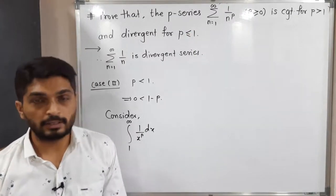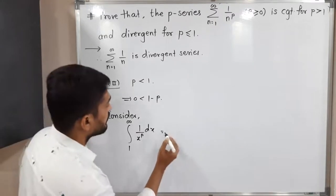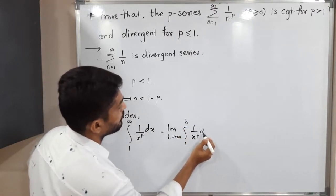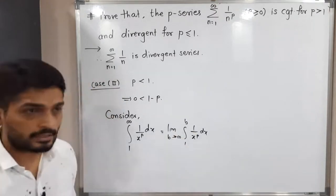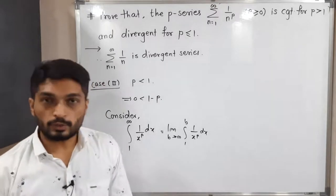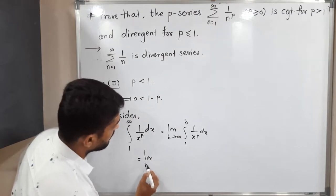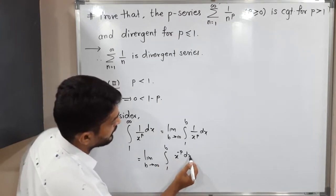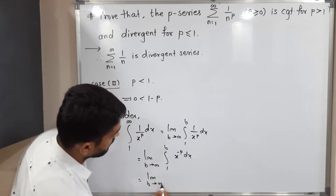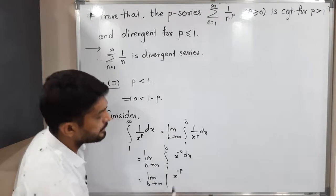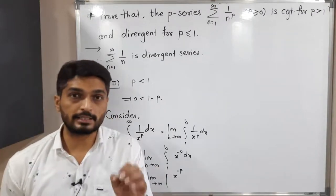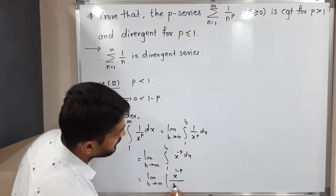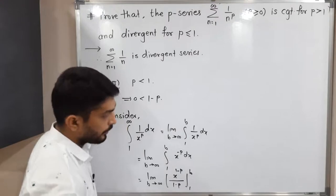We check whether this integral has a finite value or not. If finite, the series is convergent; if infinite, the series is divergent. Since infinity is an improper limit, we write: limit as b tends to infinity of the integral from 1 to b of x^(−p) dx. Integrating: x^(−p+1) divided by (−p+1), that is x^(1−p) divided by (1−p), evaluated from 1 to b.